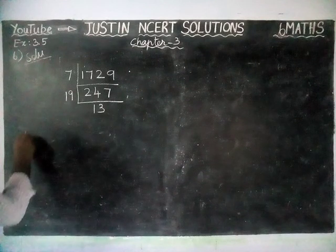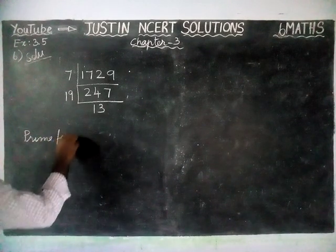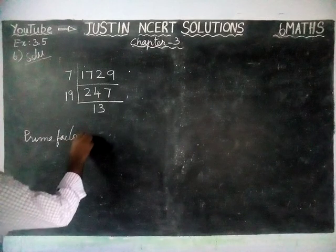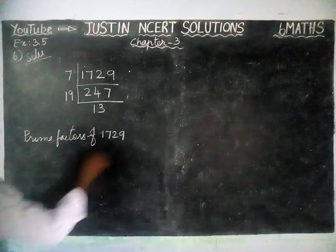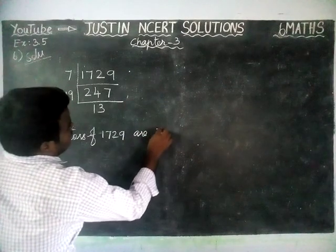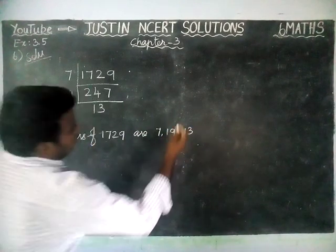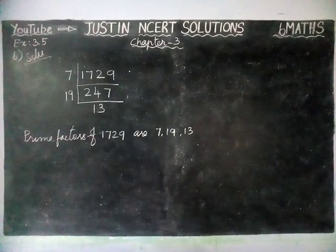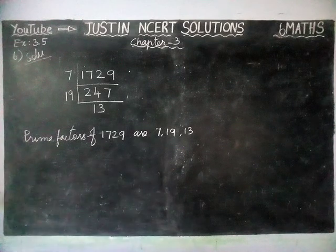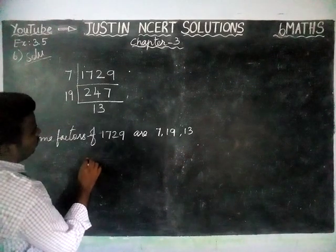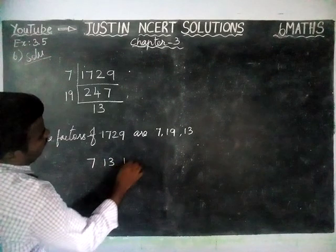Therefore, the prime factors of 1729 are 7, 19, and 13. Now we have to arrange them in ascending order: 7, 13, and 19.